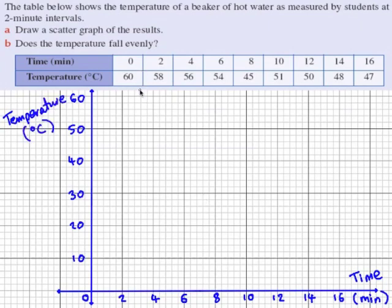Now each measurement will be placed as a cross on the grid. Firstly 0, 60. Then 2, 58. 4, 56. 6, 54. 8, 45. 10, 51. 12, 50. 14, 48. And 16, 47.